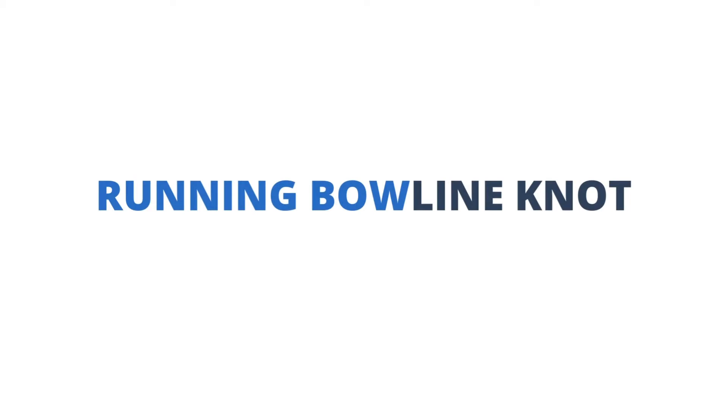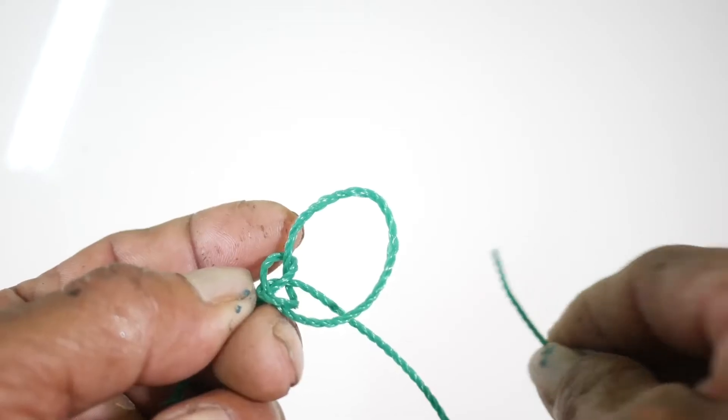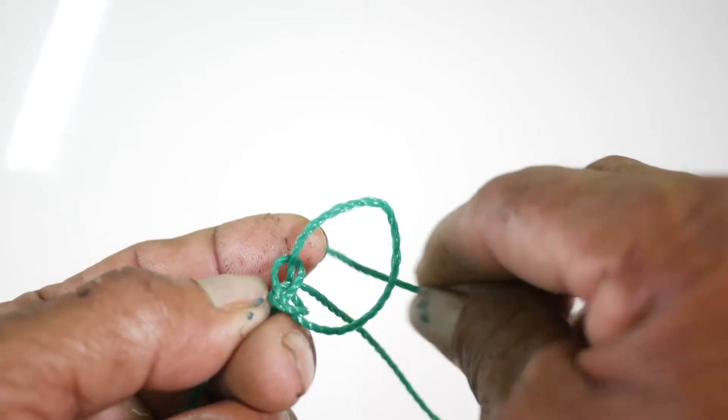Meanwhile, the running bowline is the running counterpart of the previous knot. This is used for hanging objects.